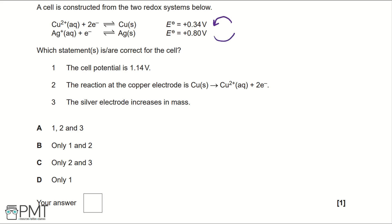If we rewrite these, we would get Cu solid going to Cu²⁺ aqueous ions and two electrons. Then looking at the silver one, we would get Ag⁺ aqueous ions plus an electron going to Ag or silver solids.